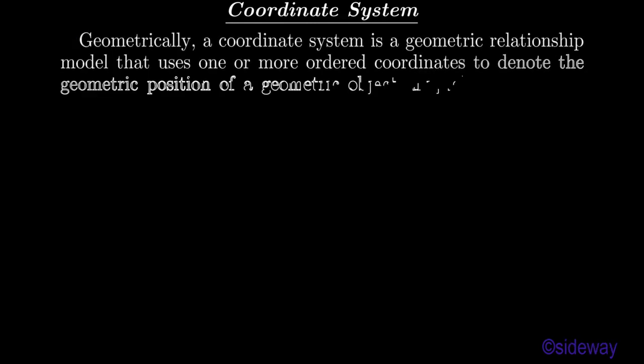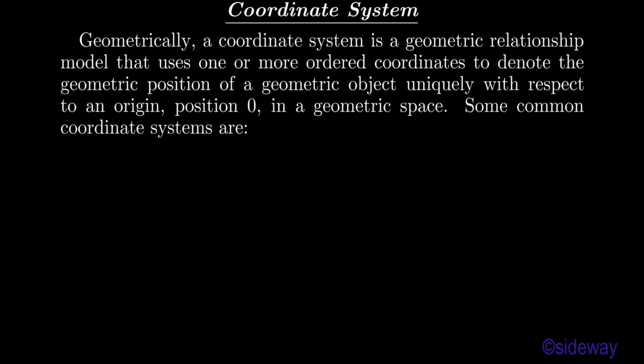Coordinate System. Geometrically, a coordinate system is a geometric relationship model that uses one or more ordered coordinates to denote the geometric position of a geometric object uniquely with respect to an origin, position 0, in a geometric space. Some common coordinate systems are: